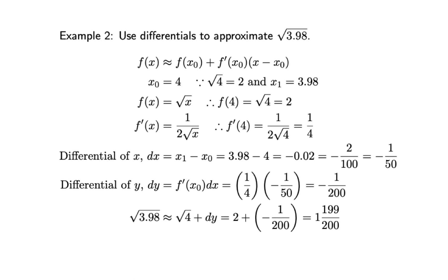Therefore, √3.98 ≈ √4 + dy = 2 + (−1/200) = 199/200.